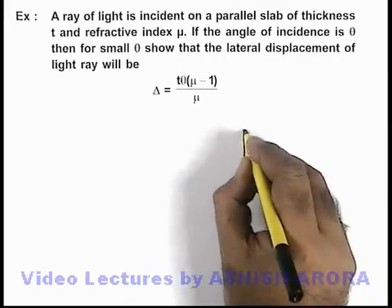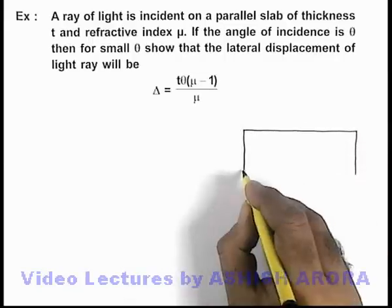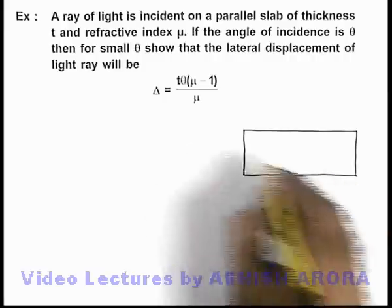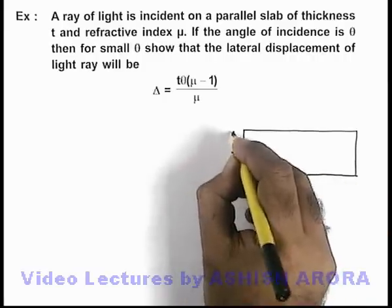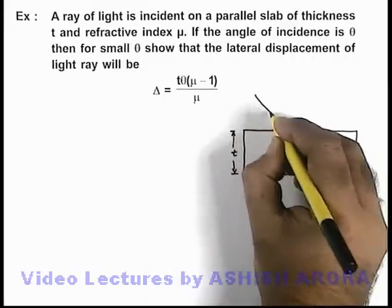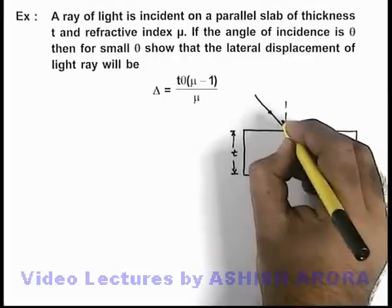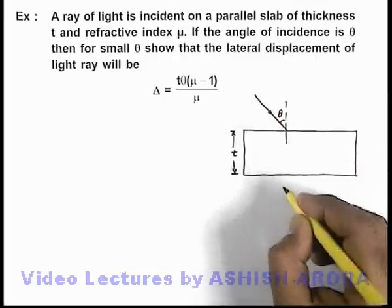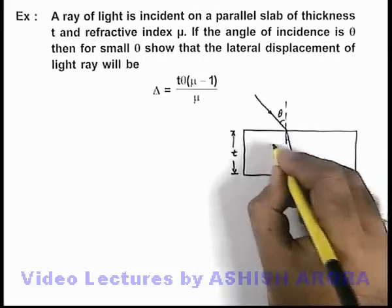If we draw the situation, say if this is the glass slab which is having its thickness t, on which a light ray is incident at an angle of incidence θ, and say it is refracted at an angle r.